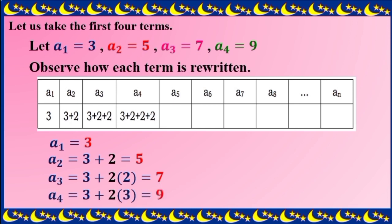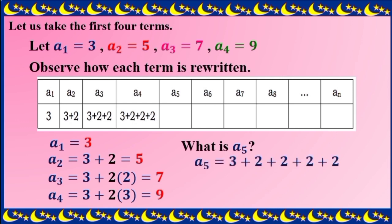The fourth term: add additional 2 canned goods. So we have 3 plus, how many 2's are there? 3. So we have 2 times 3 equals 6, plus 3 equals 9. To get the number of canned goods in the 5th row, A sub 5 is equal to 3 — the first term — plus 4 additional 2's. That means A sub 5 equals 3 plus 2 times 4, where 2 times 4 is 8, plus 3, giving us 11 canned goods in the 5th row.